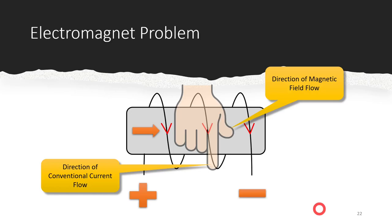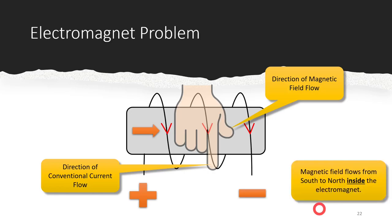If I bring my right hand - remember it has to be the right hand for conventional current flow - and point my index finger in the direction of conventional current flow, it would be pointed down. The thumb is pointed from left to right, and that is going to be the direction of magnetic field lines. So our magnetic field lines are moving from left to right on the screen. We just talked about how magnetic field lines exit the north and enter the south of a magnet.